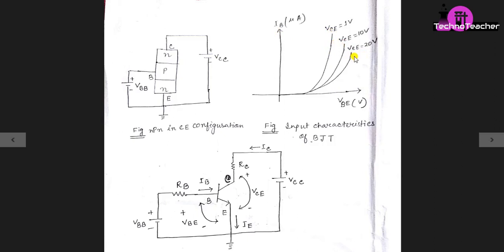This is because whenever we increase VCE, the depletion region of collector-base junction also increases. Therefore the effective base width will decrease and the current will also decrease. Now let's see the simulation of this input characteristic.